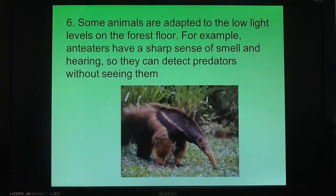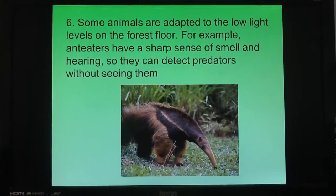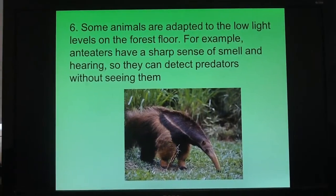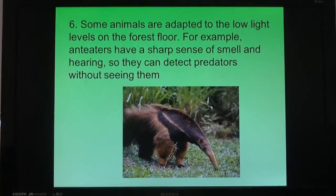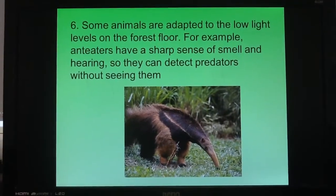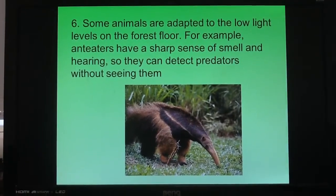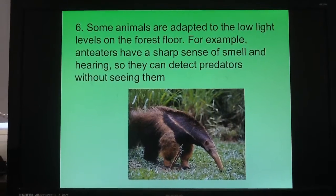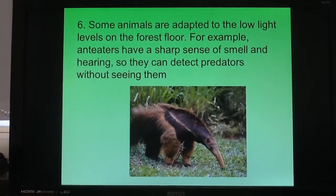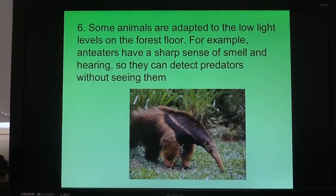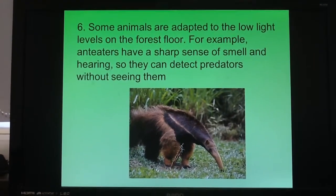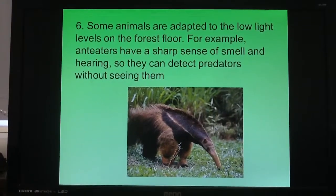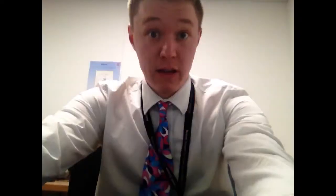Number six: just like many plants have to be adapted to the low light levels on the forest floor, many animals do too. A good example is the anteater, which has sharp senses of smell and hearing, so it can detect predators without even seeing them.